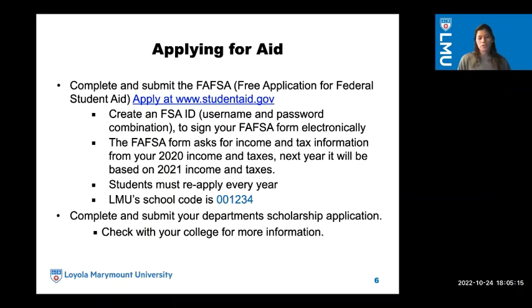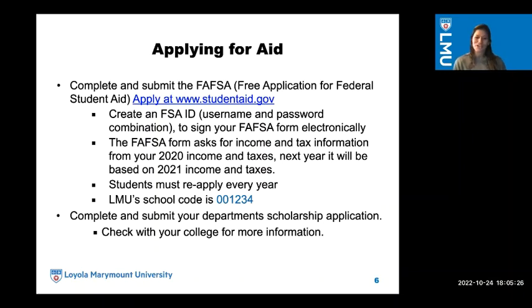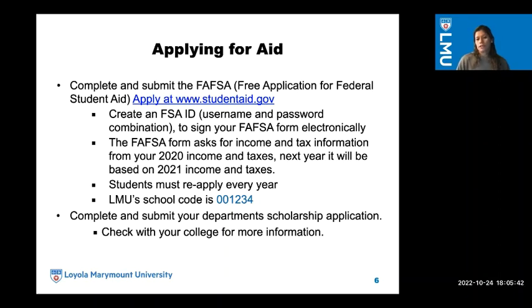The application opens October 1st, which means the application is open already for next year. Most importantly — which students tend to forget — is to add LMU on the application. Please make sure to add LMU, otherwise we don't have access to your information. Our school code is 001234. Another form of applying for aid is to complete and submit your departmental scholarship application; check in with your college specifically for more information.